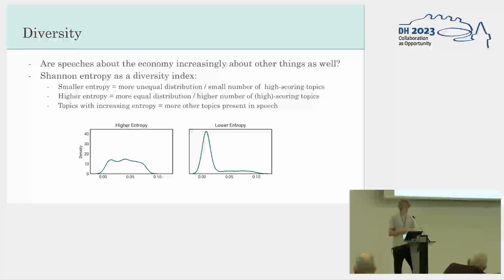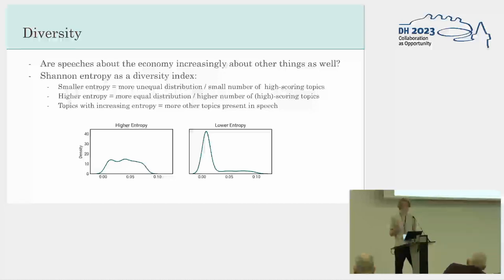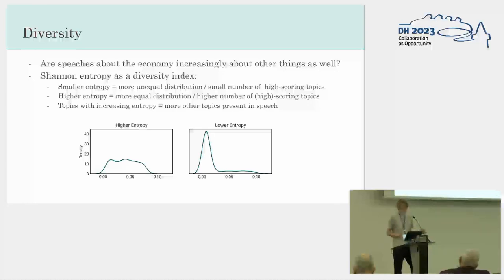A higher entropy indicates a higher number of high-scoring topics, so it's harder to say what the speech is exactly about. The idea is that in the case of economisation, entropy would actually become higher over time because economic topics would be about a lot of other things as well. So it's basically the same as the ranking idea, just from the other side.